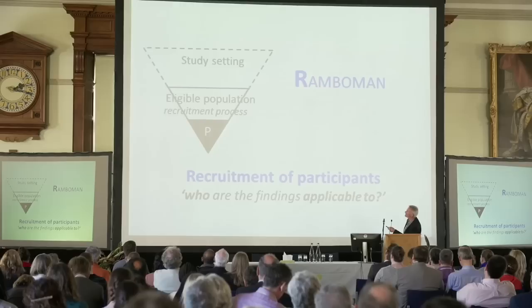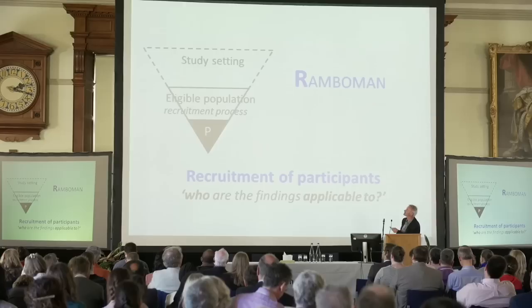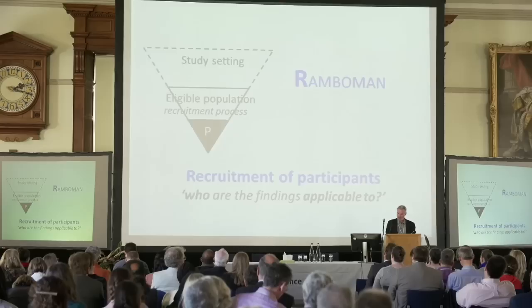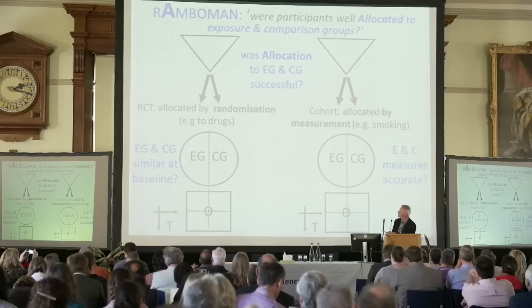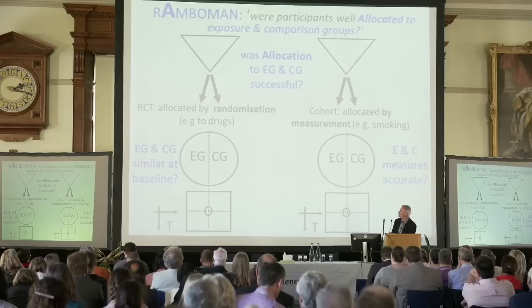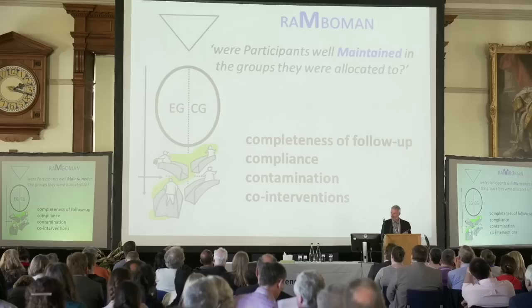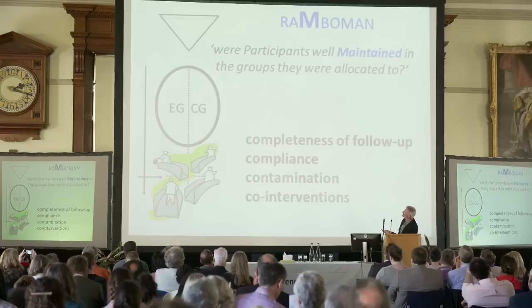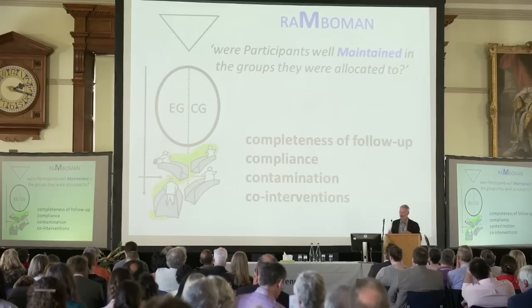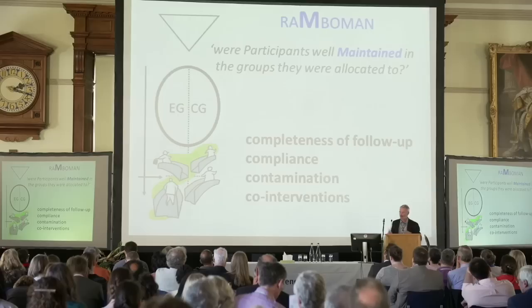Those people who take part in a study are a subset of those who are eligible, who come from some study setting. When I teach students about thinking about who participated, I draw these other groups to help put it in context. Generally there are two ways to allocate: randomly — and your key question is whether the exposure and comparison groups were similar at baseline — or by measurement or observation, where you want to know if they were measured accurately. Maintenance covers issues of completeness of follow-up, compliance, contamination, and contravention. You want the exposure group to stay in that group and the comparison group to stay in theirs.